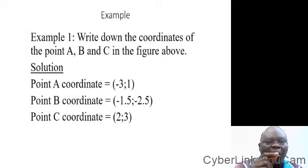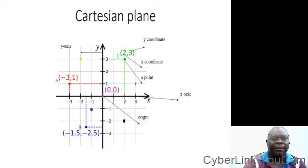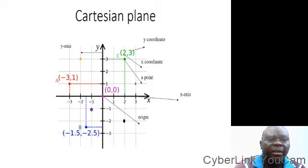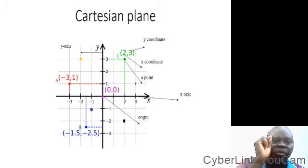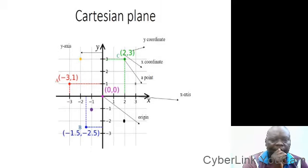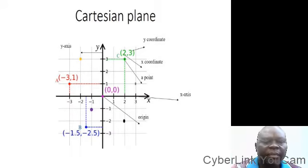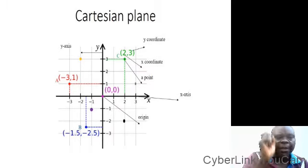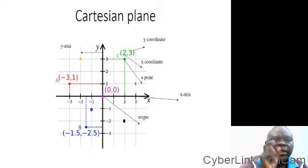We have just explained this. The coordinates of A — if you see where A is on that diagram — the coordinate is (minus 3, 1). It means that x at that point is minus 3, while y is 1. Look at B. The coordinate of B: at point B, the x-coordinate is minus 1.5 while the y-coordinate is minus 2.5. Look at C. At point C, x is 2 while y is 3.